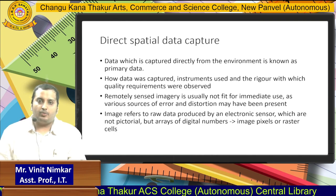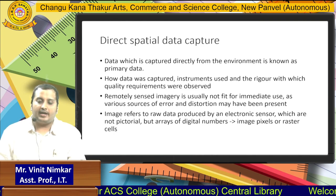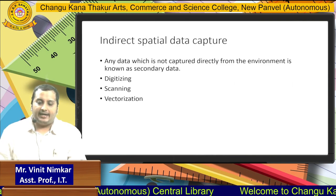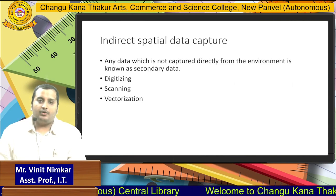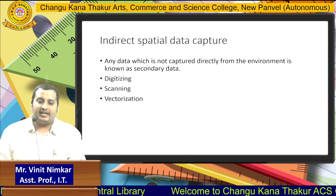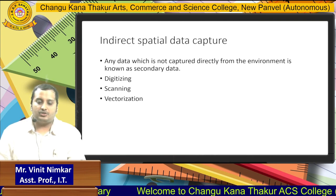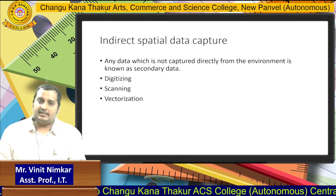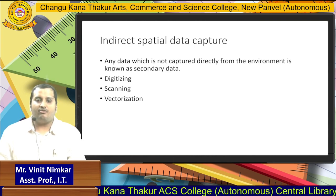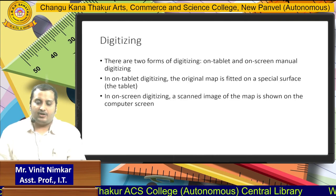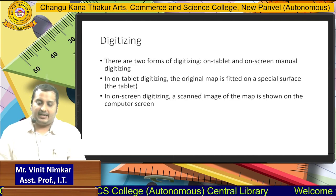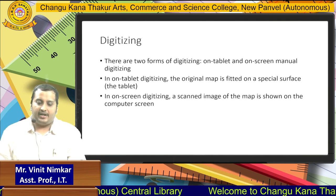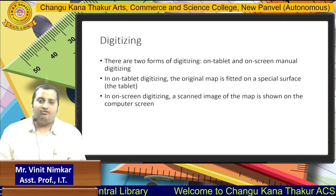If we talk about direct spatial data capture, data which is directly captured by us using some kind of instruments or sensors is called direct spatial data capture. If we talk about indirect data capture, we are talking about capturing data from certain ready-made sources such as ready-made paper maps. We can use them by digitizing, scanning, or by the process of vectorization. Digitizing is when an original paper map is fitted on a computer screen.